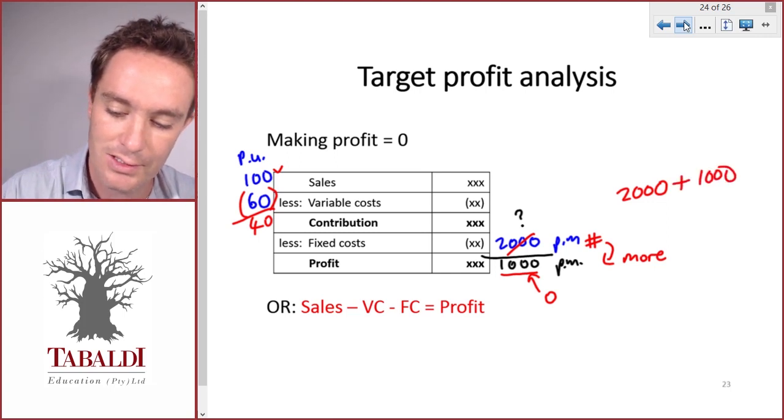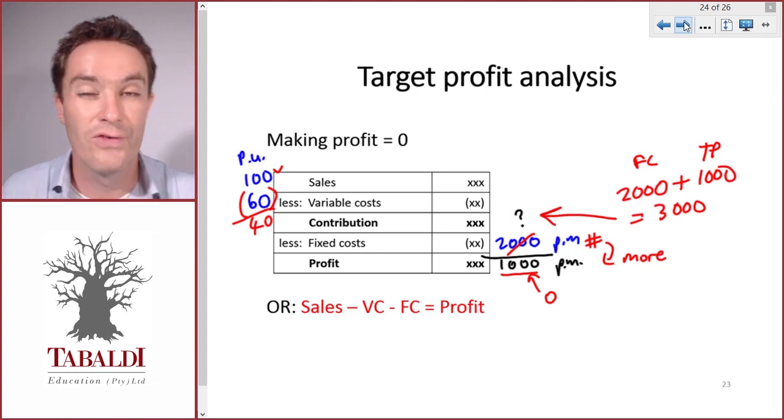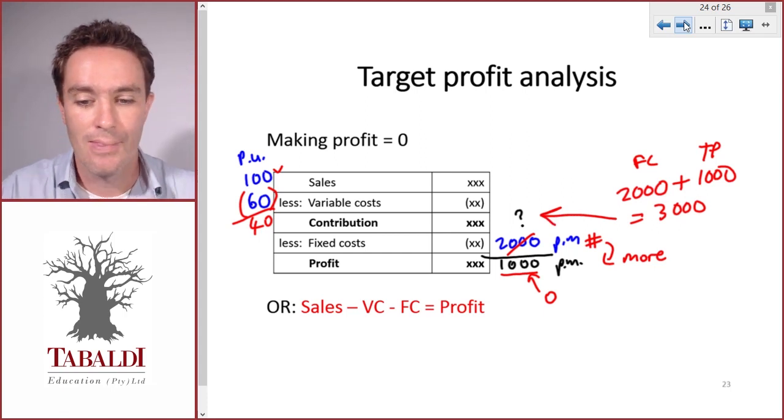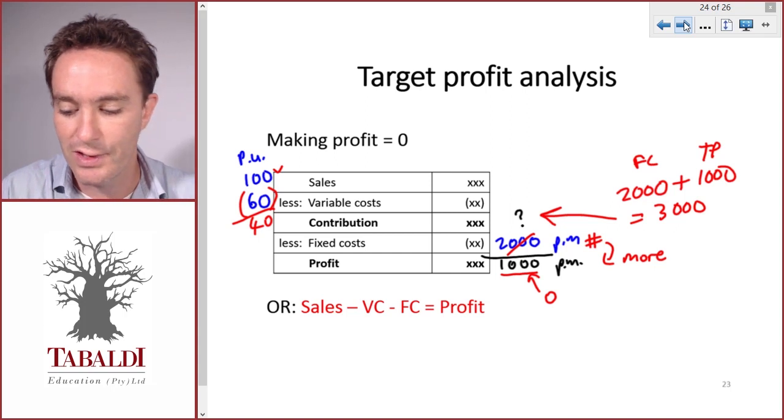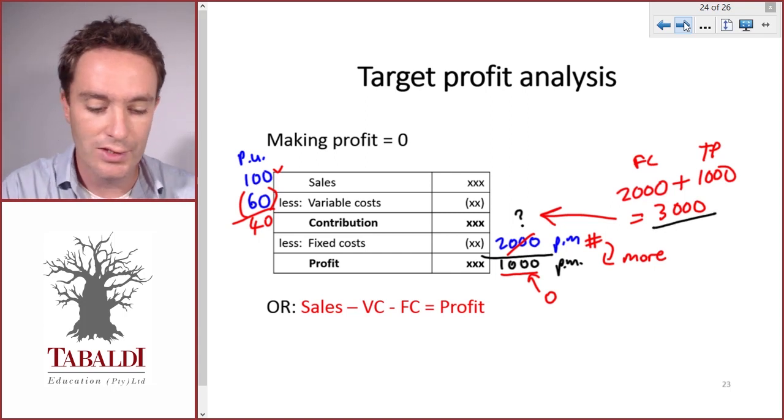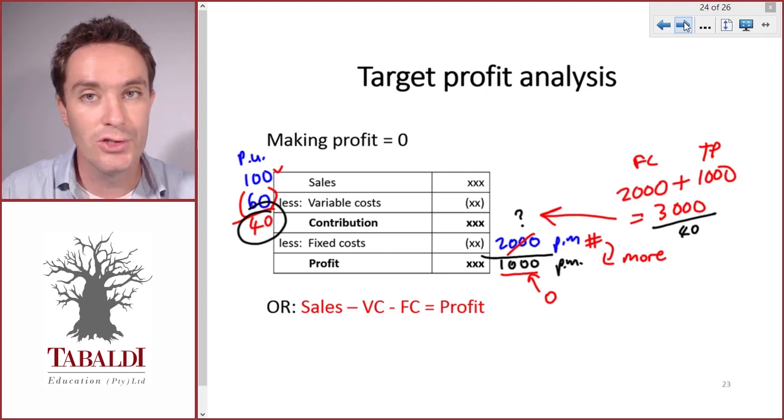So in total we require a contribution of $3,000, and now you can see where we're going with this. We need a contribution of $3,000 and each unit contributes $40, so $3,000 divided by contribution per unit will give us the number of units we require in order to make our target profit of $1,000.